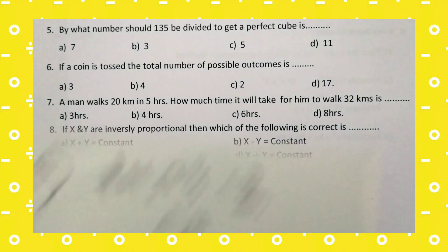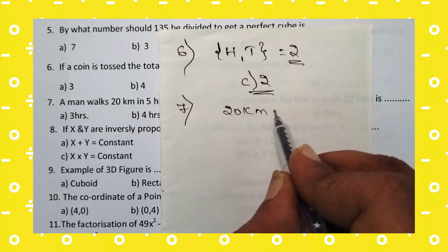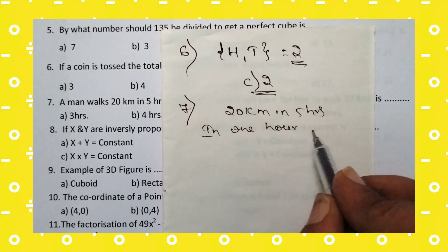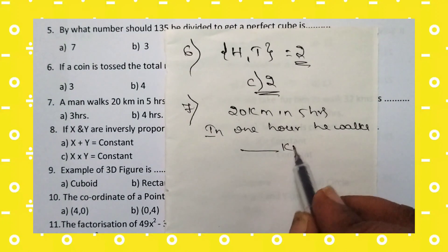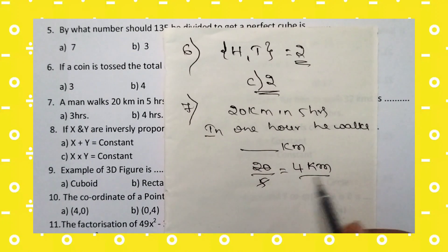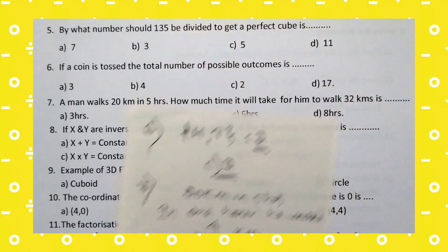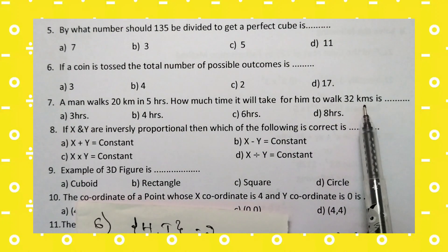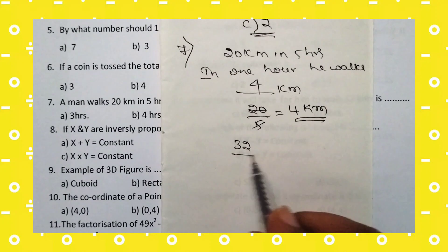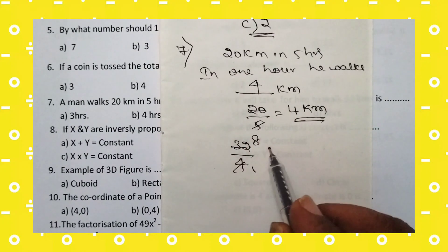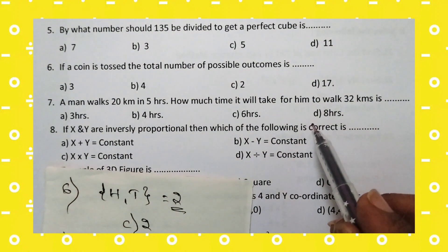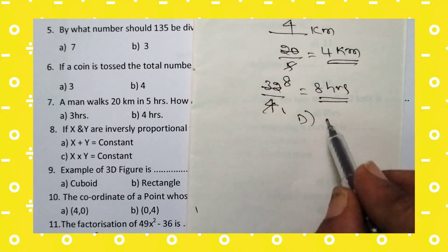Seventh question: a man walks 20 km in 5 hours. First, calculate how far he walks in 1 hour: 20 divided by 5 equals 4 km per hour. So in 1 hour he walks 4 km. If he needs to walk 32 km, divide 32 by 4, which equals 8. Therefore, to walk 32 km he will take 8 hours. For the 7th question, option D — 8 hours — is the right answer.